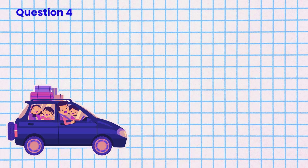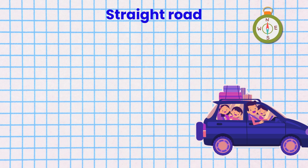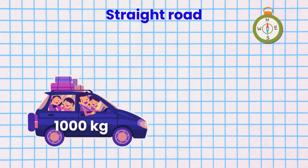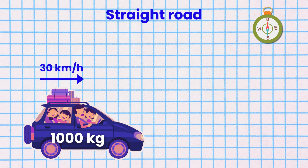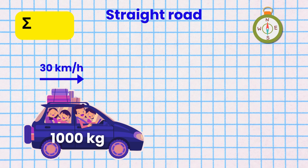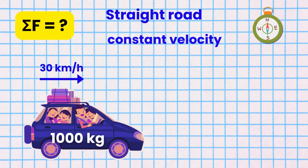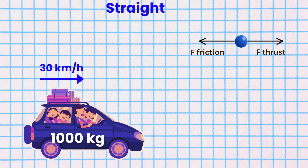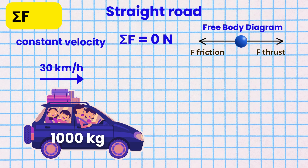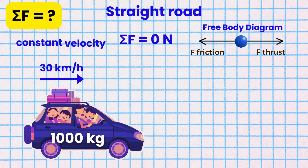Question 4: Aion and her family are traveling on a perfectly straight road eastward in a 1,000 kg car moving at a constant speed of 30 km per hour. What is the net force acting on the car? Since the car is moving at a constant velocity — because of the constant speed and direction — the net force equals zero newtons. The car is in dynamic equilibrium.